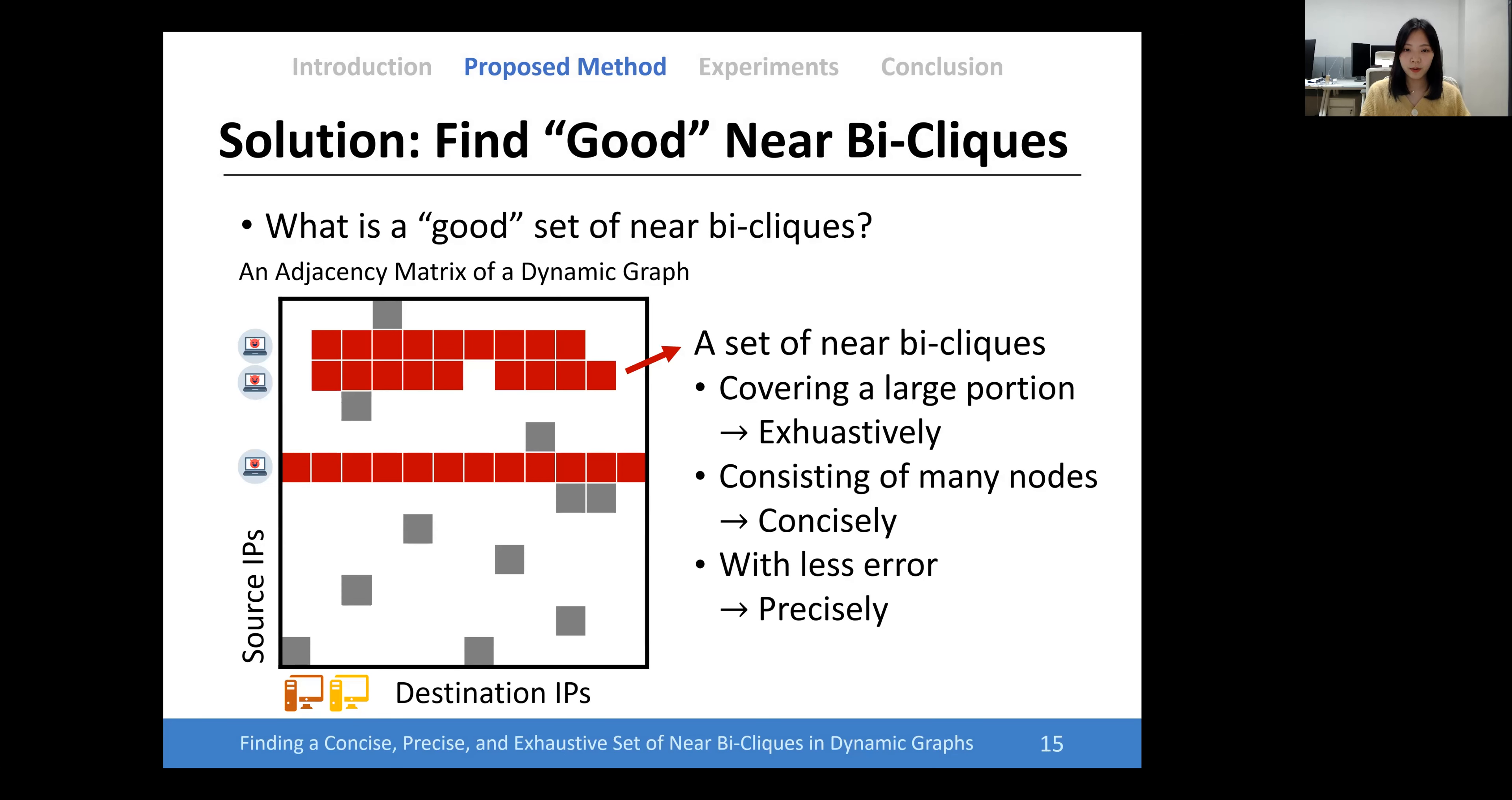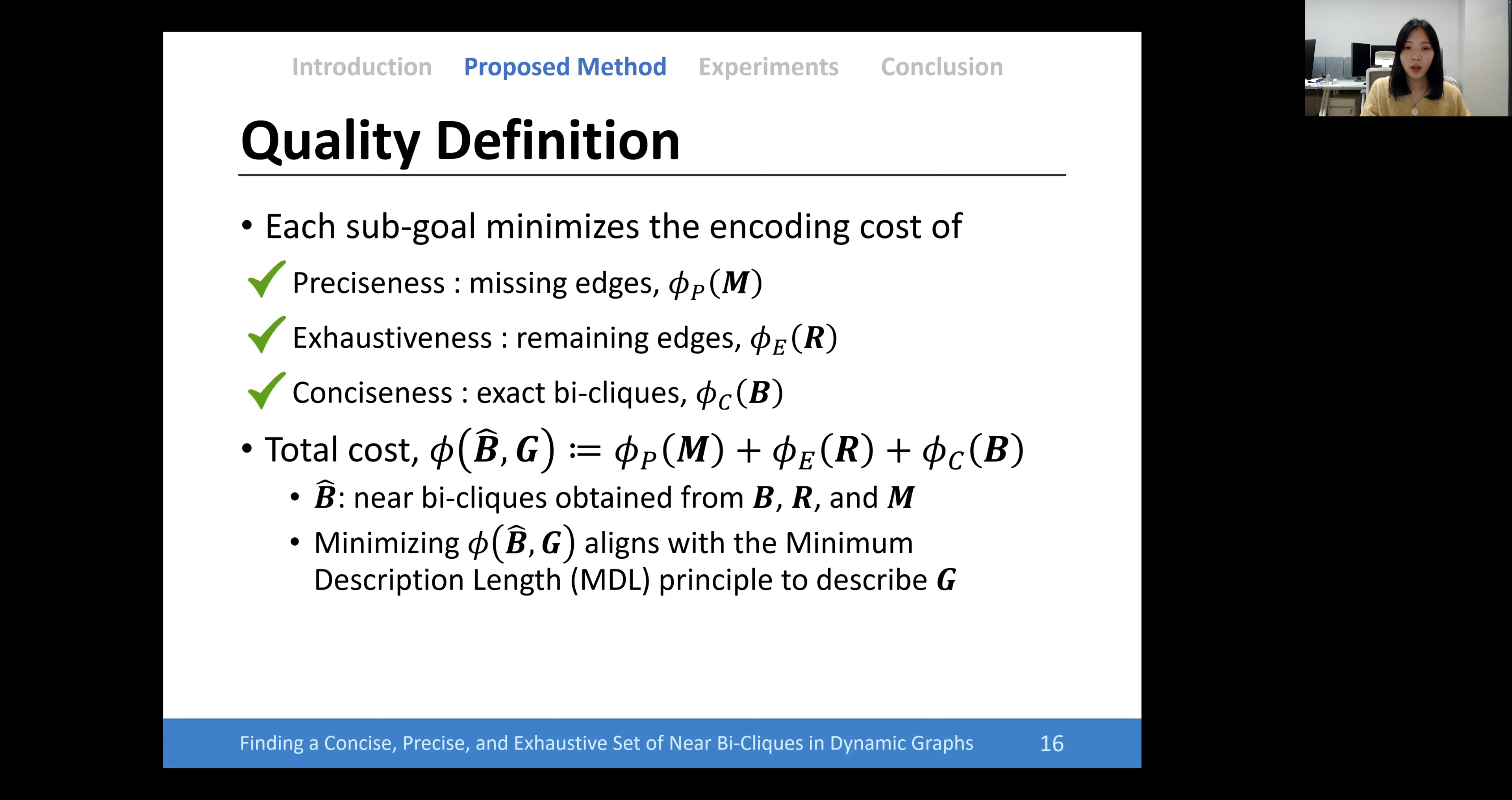Putting three rules together, a good set of near bi-cliques covers a large portion of the given graph while consisting of many nodes with less error. Each sub-goal minimizes the encoding costs of missing edges, remaining edges, and exact bi-cliques.